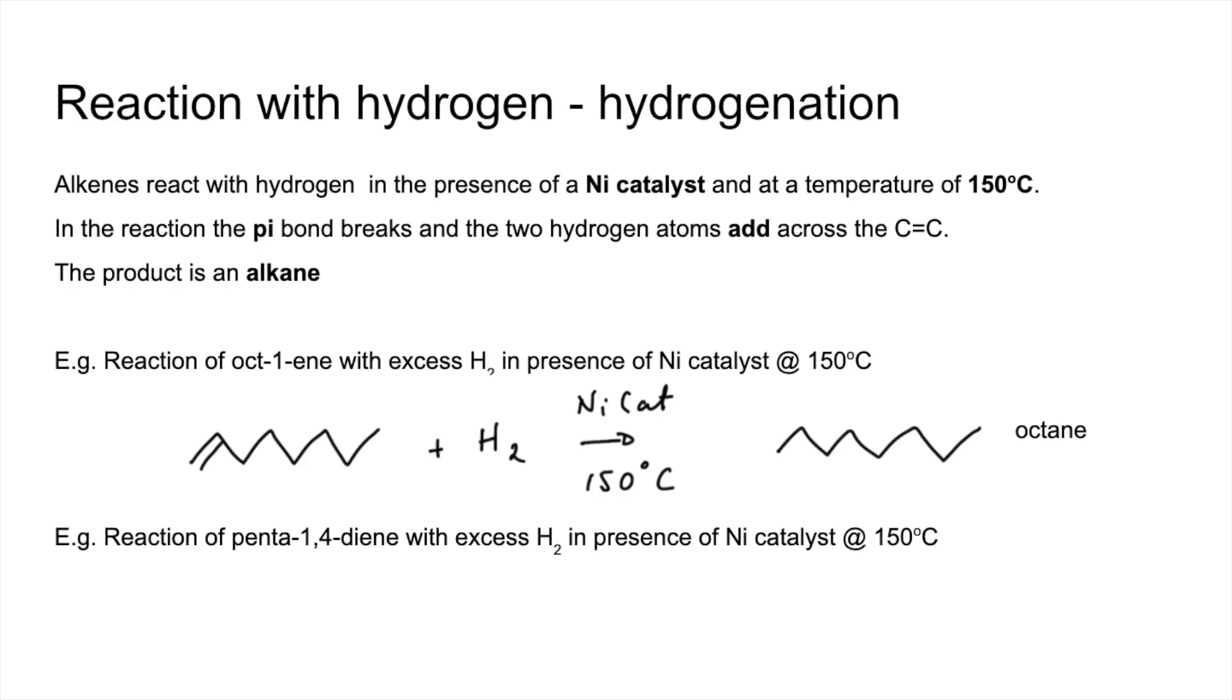Penta-1,4-diene, notice I've said with an excess of hydrogen. So both of the double bonds will break, and the two moles of hydrogen will react, and you're going to make pentane.